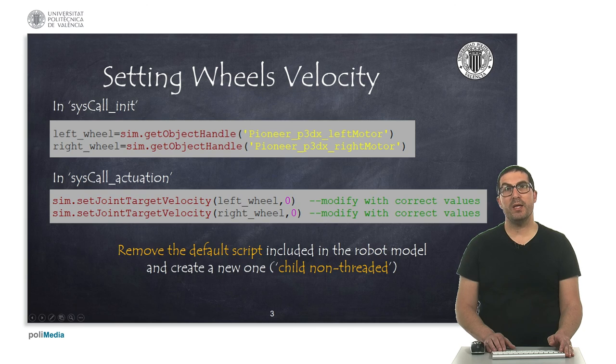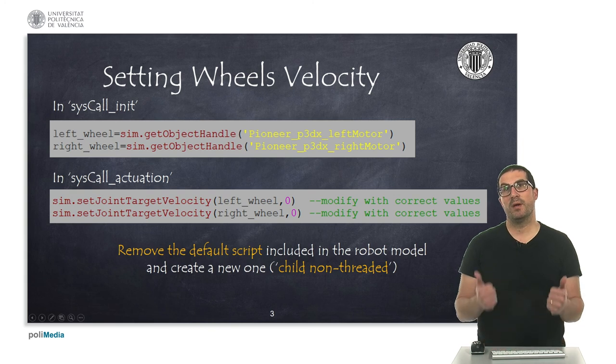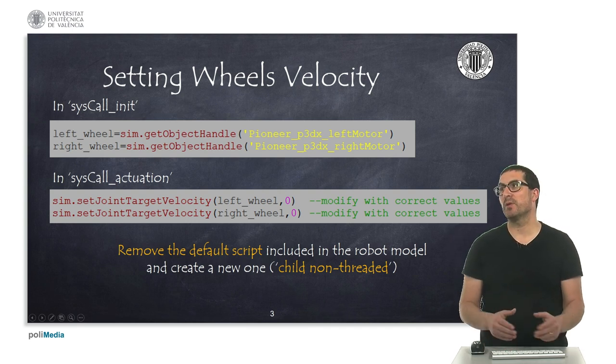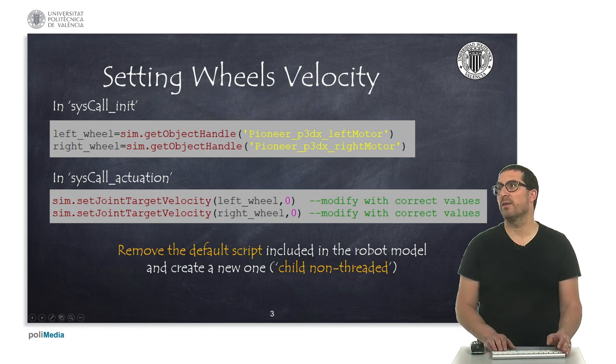In addition, to establish the wheel speeds, you must access to the robot motorized joints and call the function setJointTargetVelocity. And this is something we explained on previous videos several times. So, basically, you need to get the handles, and then you need to set the target velocities, modifying these two zeros you see here with the corresponding computed values for each of the wheels.